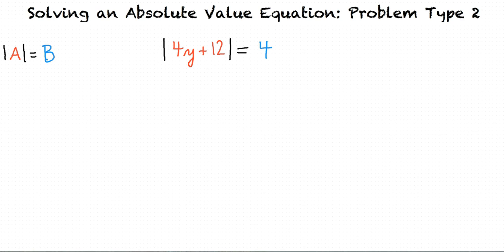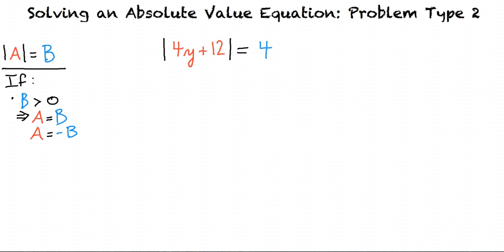So would this problem have two answers — one positive and one negative? Yes, there are two answers. The answers are not necessarily positive and negative, but we will solve the equation with the absolute value being equal to a positive number, and then we will solve it again with the absolute value being equal to a negative. Think of the equation as: absolute value of a equals b. If b is greater than 0, then a equals b, and a equals negative b.